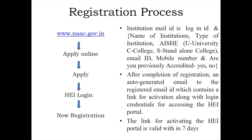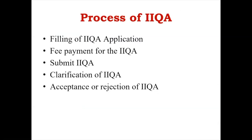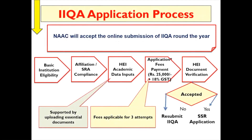The IEQ process involves: first, filling your IEQ application; second, submission of IEQ; third, clarification of IEQ; and finally, acceptance or rejection of IEQ. IEQ applications are accepted online around the year, but for a subsequent cycle you must apply before the last six months of the validity period. You must fulfill the basic institutional eligibility: either two batches passed out or six years of existence, whichever is earlier, along with affiliation and statutory regulatory compliance.